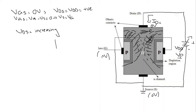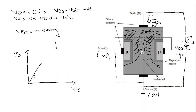Now we will draw a graph between current Id and voltage Vds. On the x-axis we have Vds and on the y-axis we have Id. When we increase Vds from zero to some positive value, the current Id increases proportionally as determined by Ohm's law, and the resistance of the channel remains approximately constant. At the point where the two depletion regions appear to meet each other, the voltage Vds is called the pinch-off voltage.